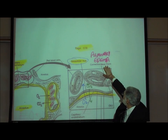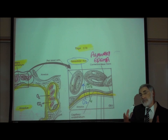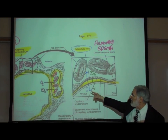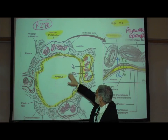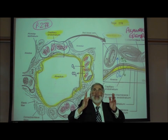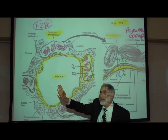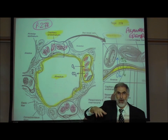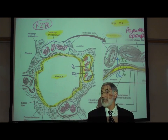When a patient develops pulmonary edema — a buildup of tissue fluid in the lungs — most of that fluid accumulates in the space between the alveolar wall and the capillary wall. As more fluid accumulates, it creates a wider and wider distance between the two, slowing the diffusion of oxygen from the alveolus into the capillary and carbon dioxide in the reverse direction, thereby interfering with gas exchange between the lungs and the bloodstream.